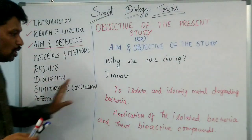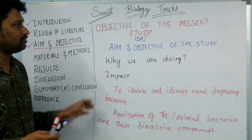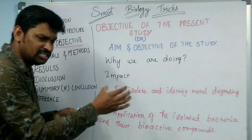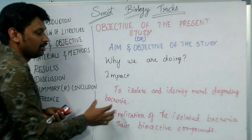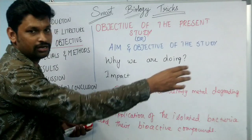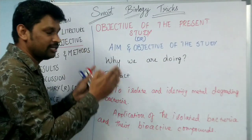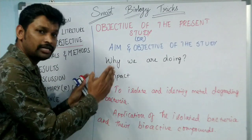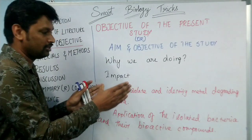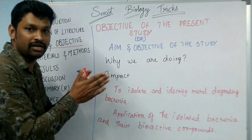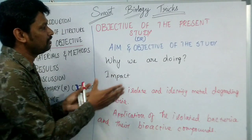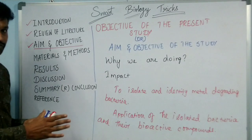So like this, MSc thesis — four objective points, aim and objective of the study. For example: bacteria screening by gram staining method, bacterial identification by 16S rRNA sequencing method. You have to follow the exact methodology point by point. The main theme should be one sentence — it should be comprehensive, covering different methodology.